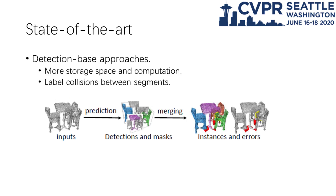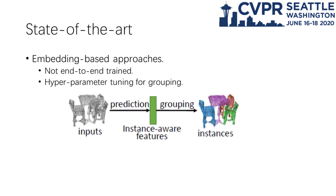Detection-based approaches depend on a detection module to separate different instances, but require more memory and computation. Embedding-based approaches need to first learn embeddings and then group them, but cannot be trained end-to-end.